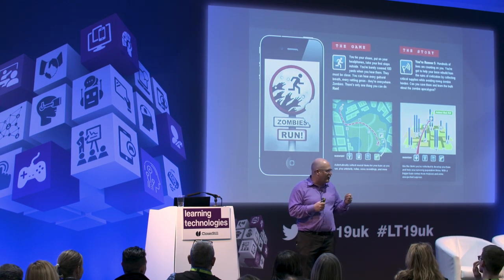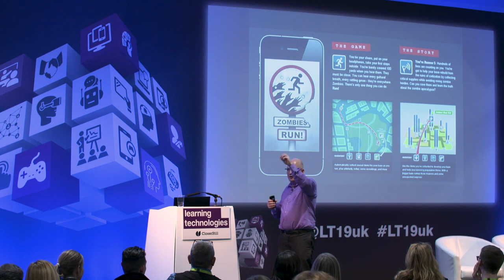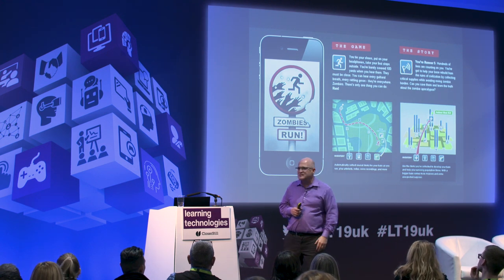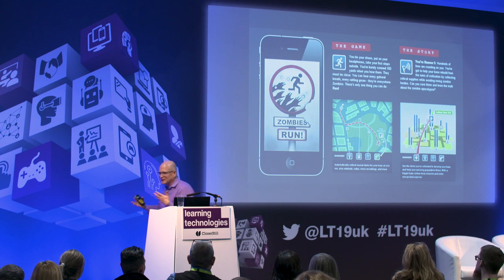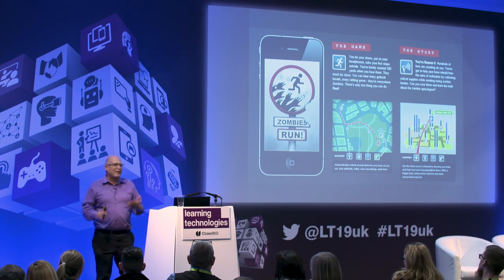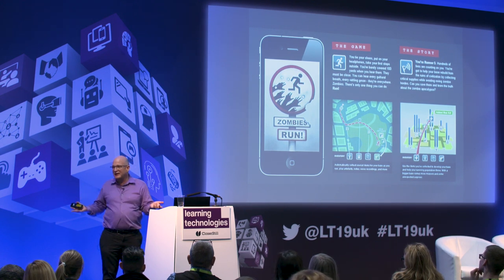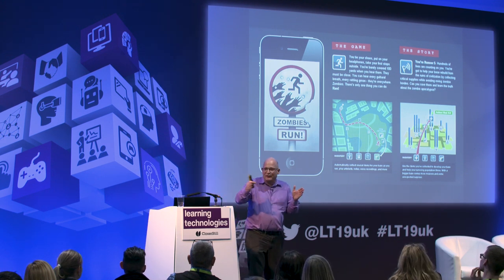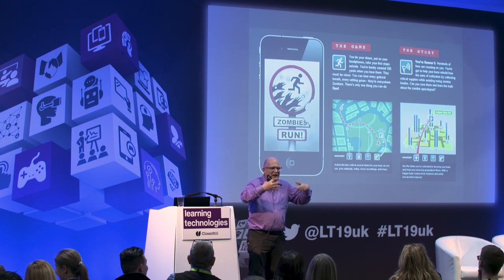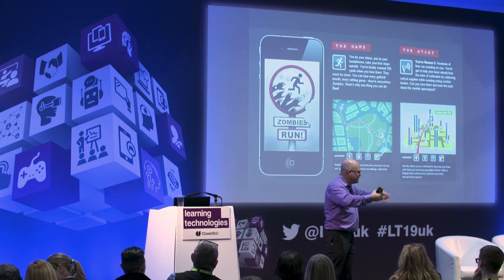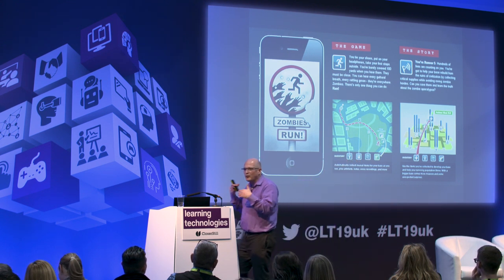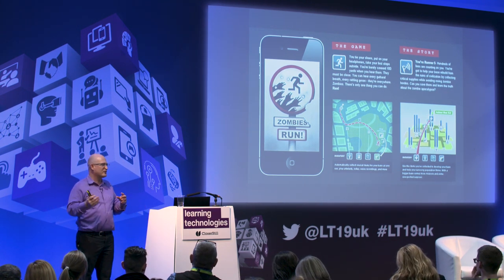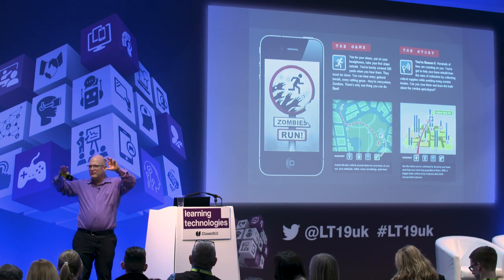In Zombies Run, you're a runner in post-apocalyptic Earth. As you run, the app narrates: 'you picked up some medicine, go to sector 12, there are no zombies' — then suddenly 'sector 12 has zombies, run!' At that point, you're doing interval training because you're running from the zombies. It gives you that story that motivates you. Think about whether your training modules could be put under one story umbrella that guides the learner through the learning process.